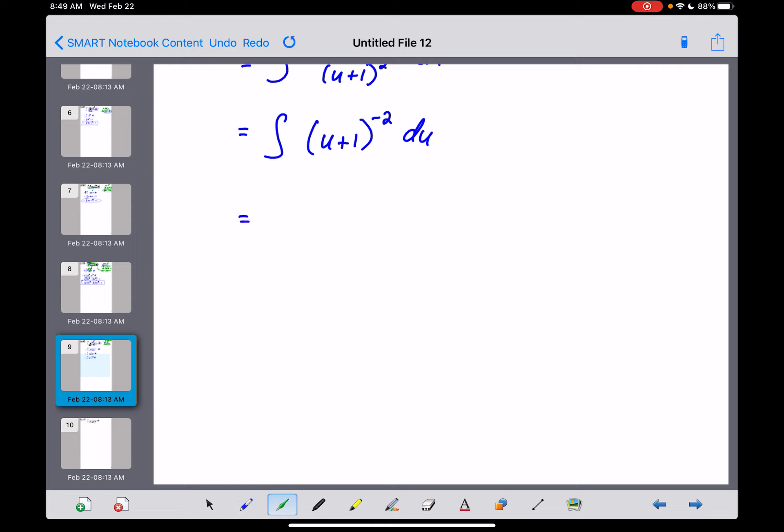And the reason why? Because the derivative within is constant. If that was like a u cubed plus 1, this problem would be much, much tougher, if not impossible. So where are we right now?